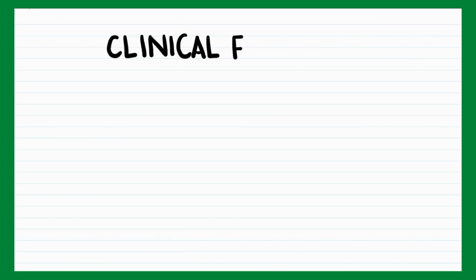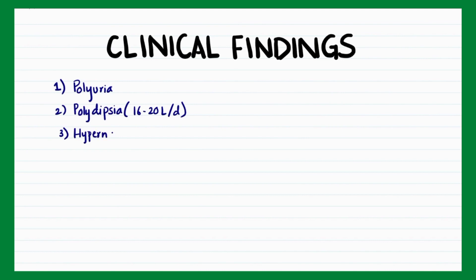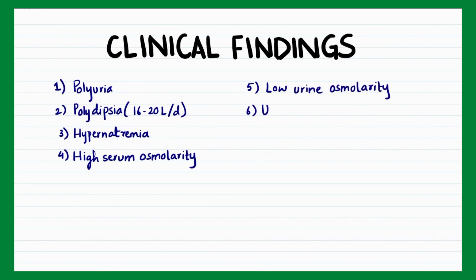Clinically, patients present with polyuria, which is excessive urination, and polydipsia, which is excessive thirst, and patients consume about 16 to 20 liters of water per day. Lab tests reveal hypernatremia with high serum osmolarity, coexisting low urine osmolarity, and low urine specific gravity. Nocturia is also expected in such patients.